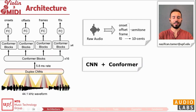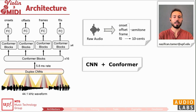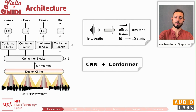Now let's start with the architecture. We input raw audio at 44 kilohertz into onset, offset, frame, and f0 representations using a combination of convolutional and conformer networks.